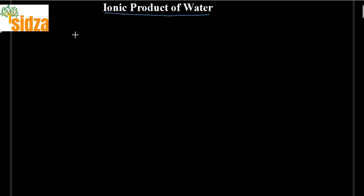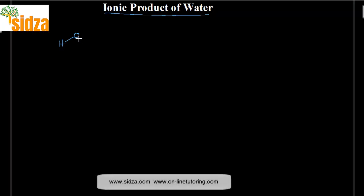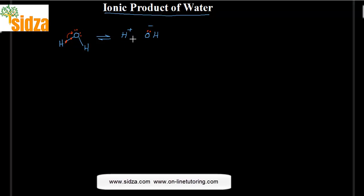We have the water molecule H₂O, which ionizes to a very small extent. The hydrogen-oxygen bond breaks: oxygen is more electronegative, so it takes both electrons — it also has two lone pairs — giving you a hydroxyl group OH⁻ and an H⁺ proton. But this proton does not exist alone.